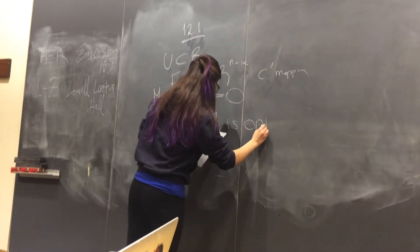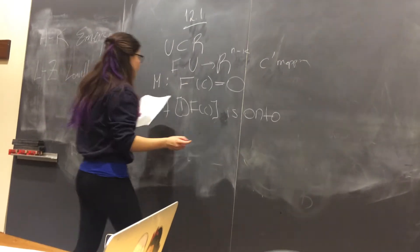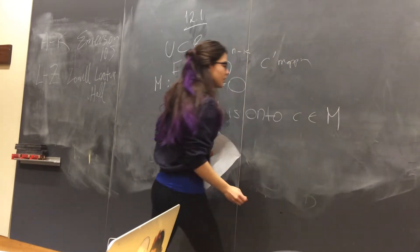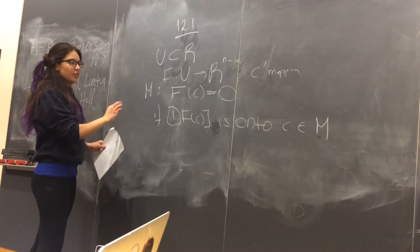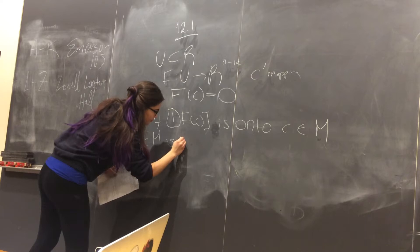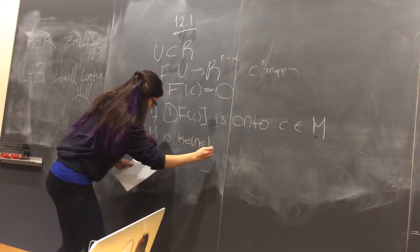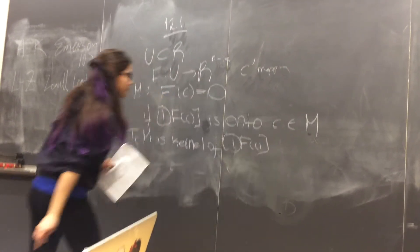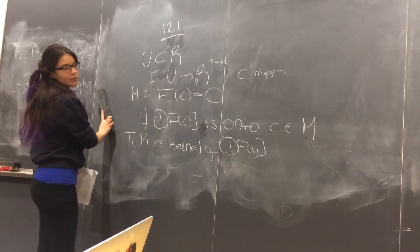We want to prove that if F of C is onto for C belonging to the manifold M, then we know that the tangent space TCM is the same as the kernel of DFC. That's what we're trying to prove.